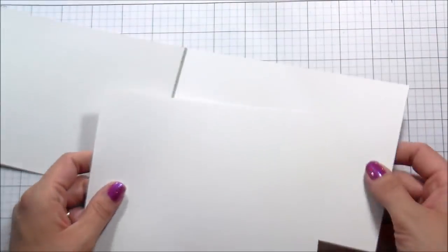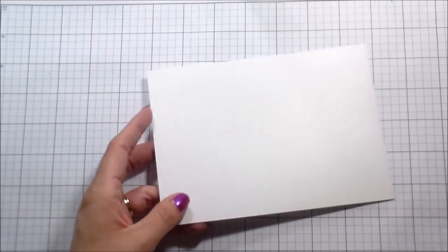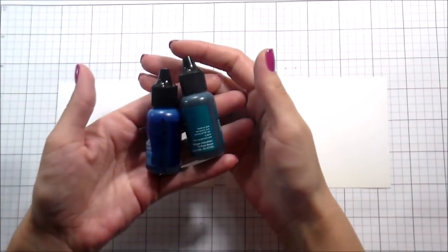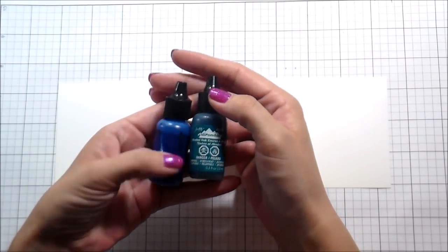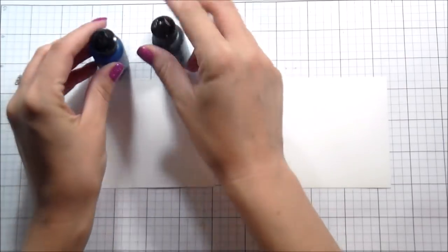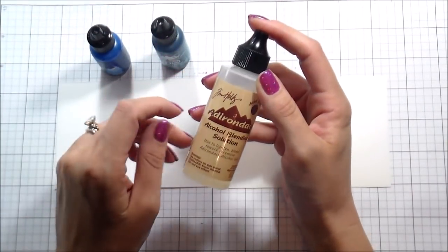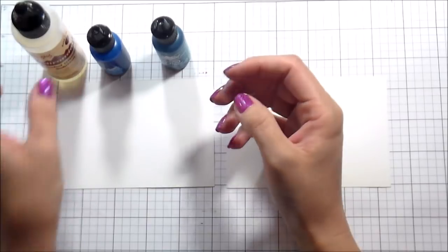So I have some Yupo paper here and I had done another video where I used alcohol inks and a lot of people had questions about the paper I was using. Yupo paper, the one that I have, that's what the pad looks like. It's solid white. There's also another one that is vellum. Vellum is not the one that you want.